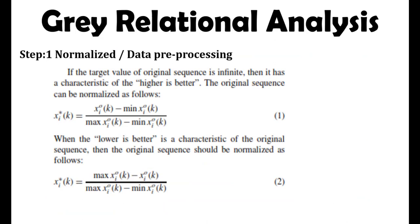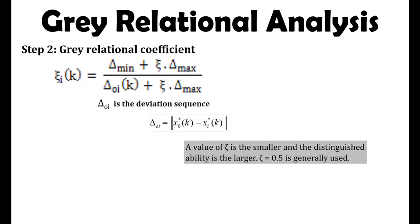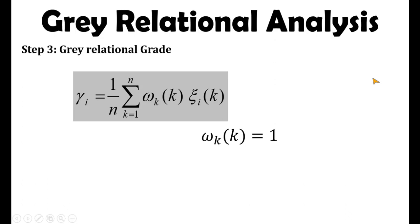There are three steps in grey relation analysis. The first step is normalization — pre-processing the given data, which can be done using two formulas. The second step is the grey relation coefficient, where we calculate the deviation sequence and use a standard value of 0.5. The third step is calculation of the grey relation grade.